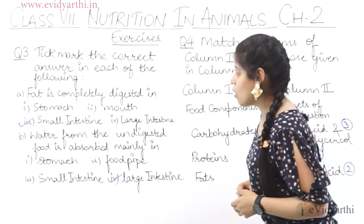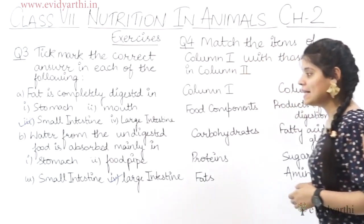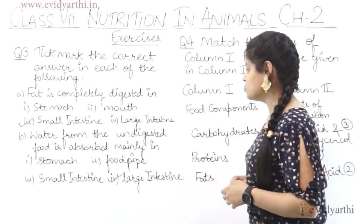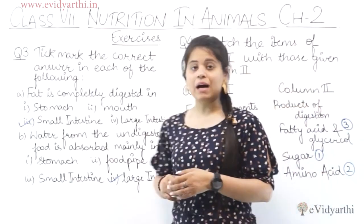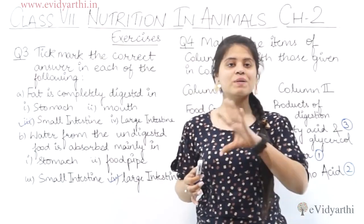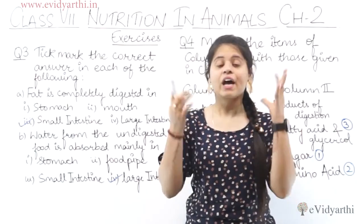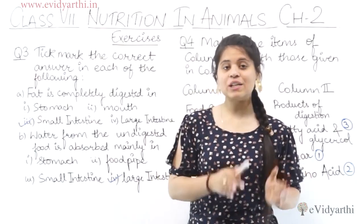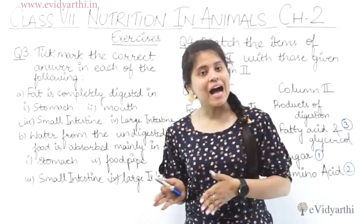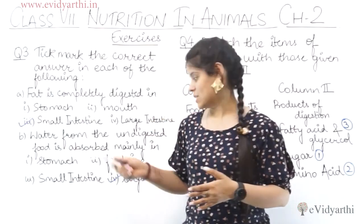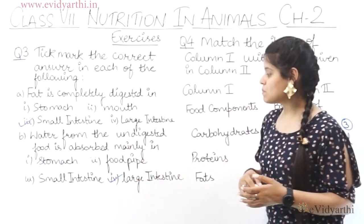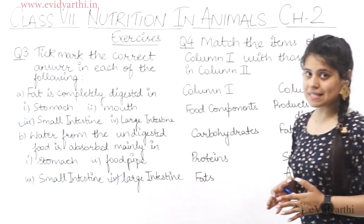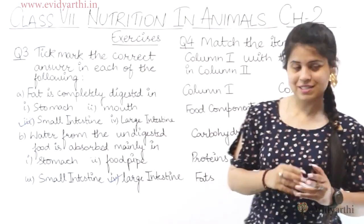Second one is: water from the undigested food is absorbed mainly in — the water in undigested food goes into the large intestine. Options are stomach, food pipe, small intestine, and large intestine. So the answer is large intestine.